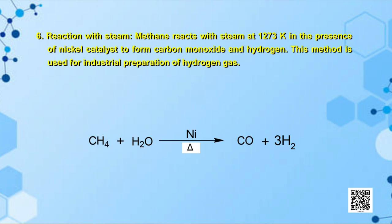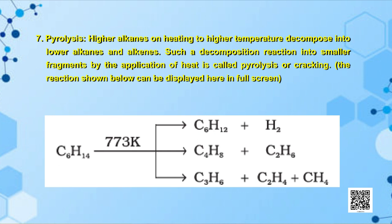Another chemical reaction is with steam: methane reacts with steam at 1273 K in the presence of nickel catalyst to form carbon monoxide and hydrogen — this method is used for industrial preparation of hydrogen gas. Finally, pyrolysis: higher alkanes on heating to higher temperatures decompose into lower alkanes and alkenes. Such decomposition into smaller fragments by application of heat is called pyrolysis or cracking. It has not been possible to separate and isolate different conformational isomers of ethane because of their rapid interchange between conformations. In summary, we studied classification and naming of hydrocarbons, physical and chemical properties of alkanes, different isomers, and methods to synthesize alkanes.